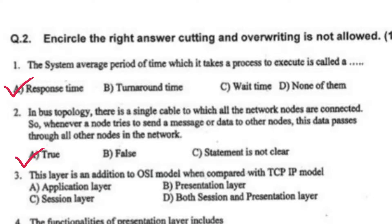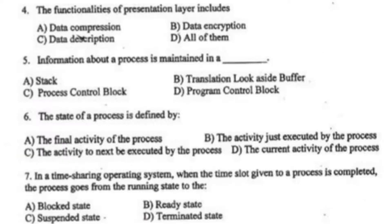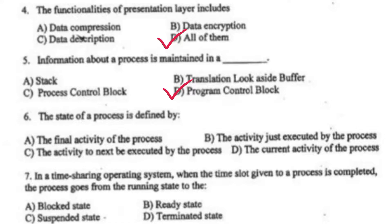This layer is an addition to the OSI model when compared with the TCP/IP model — both session and presentation layer. The functionalities of presentation layer include all of them. Information about a process is maintained in — right option D, program control block. The state of a process is defined by — right option D, the current activity of the process.